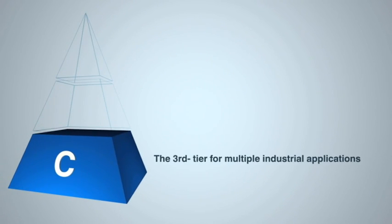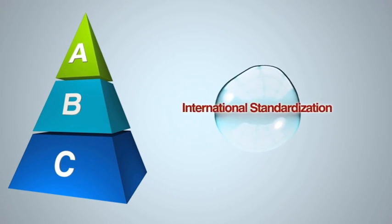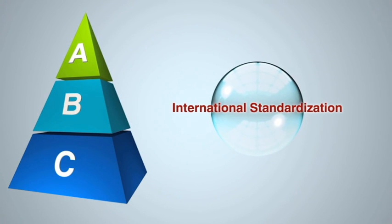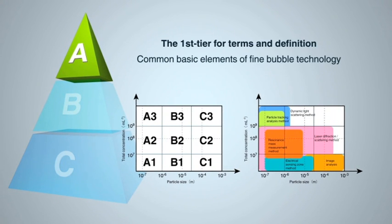By first establishing the necessary ISO standards, a robust market can be developed so that the world can begin enjoying the benefits of this new technology. To ensure global harmonization, for the basic standards A, we will establish fine bubble generation, distribution, and a measurement map as standards for bubble density and for common basic elements of fine bubble technology, such as the sizes of fine bubbles and ultrafine bubbles. By establishing international standards for such characteristics as the type of liquids and gases and the bubble retention time in a liquid, those working in this field can focus on further development using a common language.